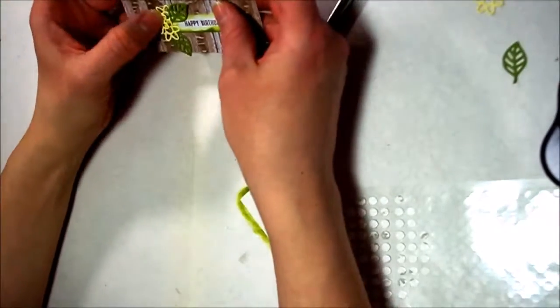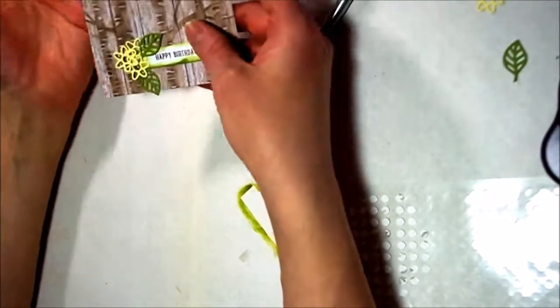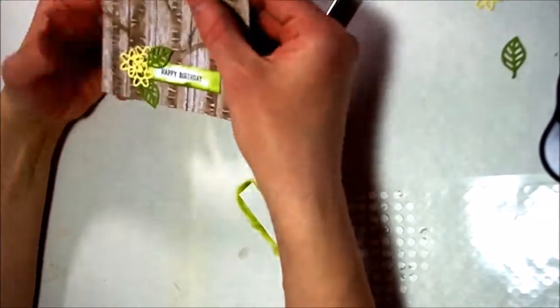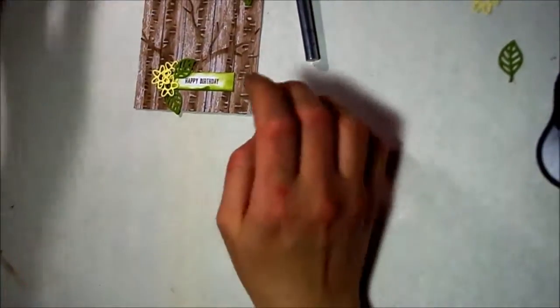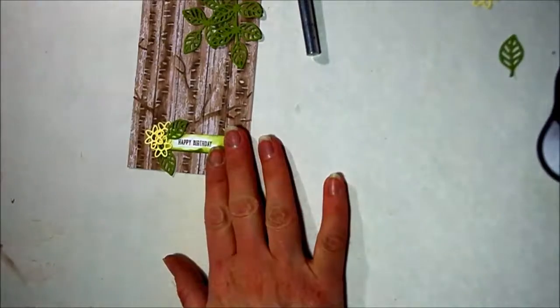You can still kind of see shiny behind there, but at least it's not sticky to the touch, and so it won't stick on the envelope when you try to mail it or something. Okay, so there's our front. We're going to attach it to our card base.